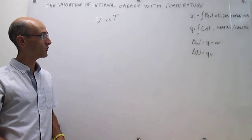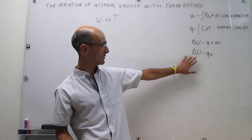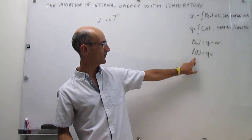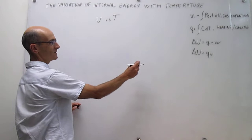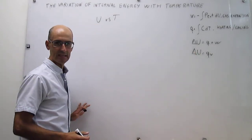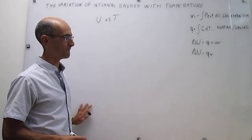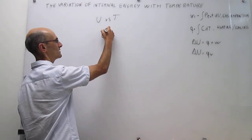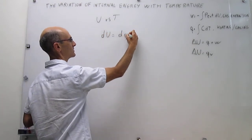We have a couple of ways to go about this. First, we can use this expression for the change in internal energy, which comes from the first law. The change in internal energy for any process is just the heat evolved if the process were to take place at constant volume. In differential form, that expression is: dU = dQ_V.